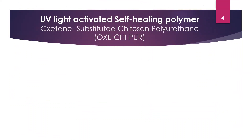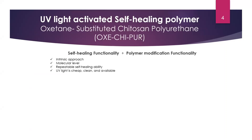For this study, we used a new generation of polymer called a UV light-activated self-healing polymer — an oxetane-substituted chitosan polyurethane. This polymer combines two functionalities in one material: it can improve the self-healing rate of asphalt binder and at the same time has the properties of a polymer, improving mechanical properties of asphalt pavement. For the self-healing functionality, it is an intrinsic approach that happens at the molecular level, is repeatable, and can heal cracks at the same location again and again. The self-healing process is activated by UV light, and sunlight is a cheap, clean, available source of UV.